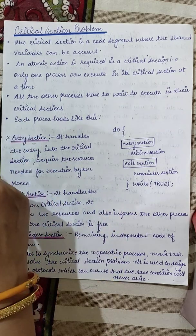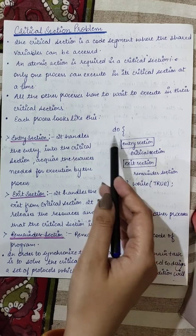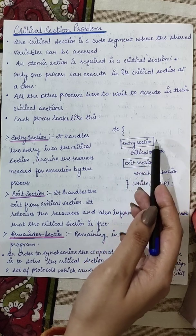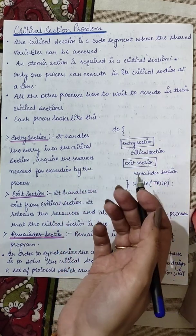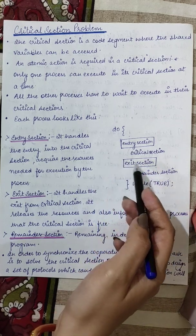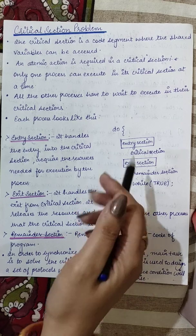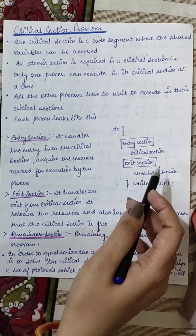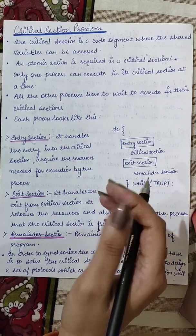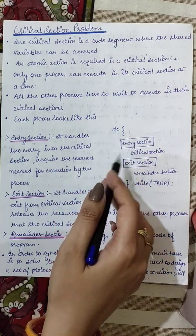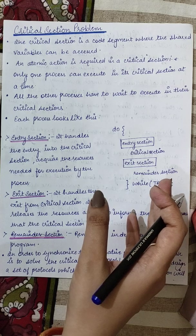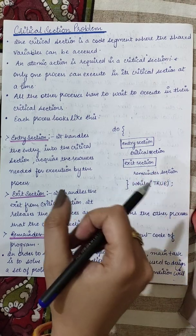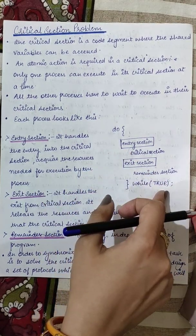The structure of every process is like this: in a do-while loop, there is an entry section — an area that handles entry into the critical section, acquiring whatever resources are required to access the shared resource. If it has permission, it will execute the critical section and access and modify the shared resource. Then it will exit from the critical section, informing other processes that they can now execute the critical section. Then the remainder section runs the rest of the code. This is the main structure of a process.